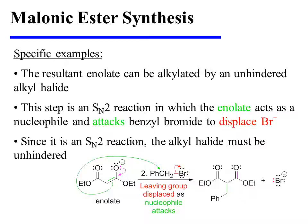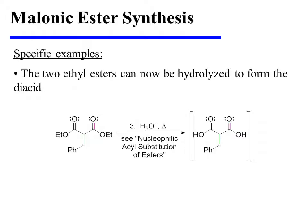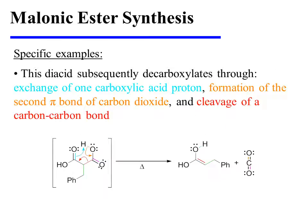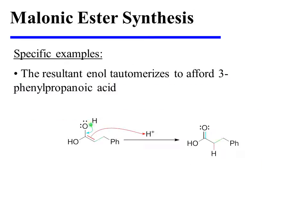Since it is an SN2 reaction, the alkyl halide must be unhindered. The two ethyl esters can now be hydrolyzed to form the diacid, which subsequently decarboxylates through the exchange of one carboxylic acid proton, the formation of the second pi bond of carbon dioxide, and the cleavage of a carbon-carbon bond. The resultant enol tautomerizes to afford the product, 3-phenylpropanoic acid.